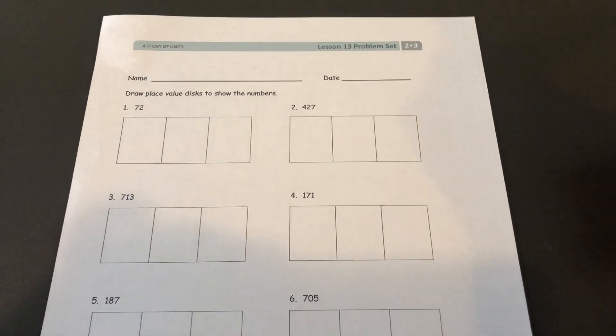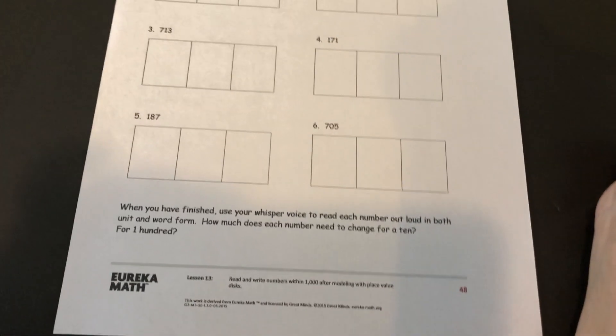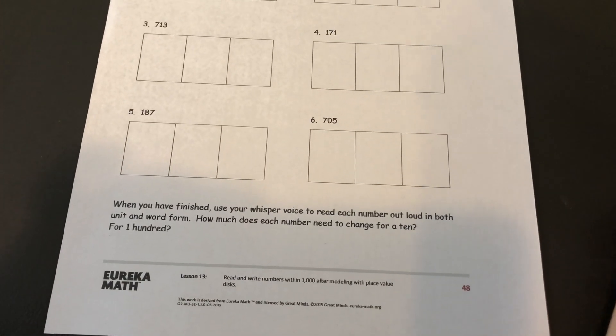So let's start with just these ones on the bottom. It wants you to draw place value disks to show these numbers.